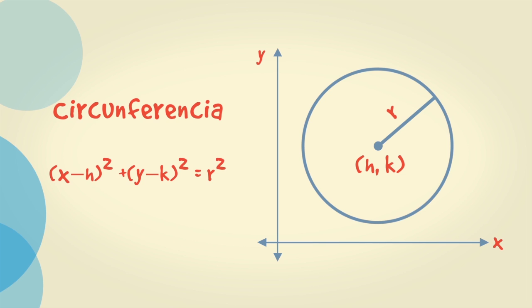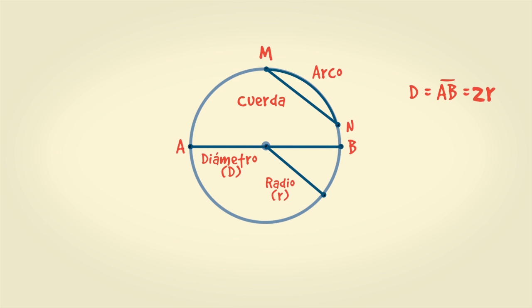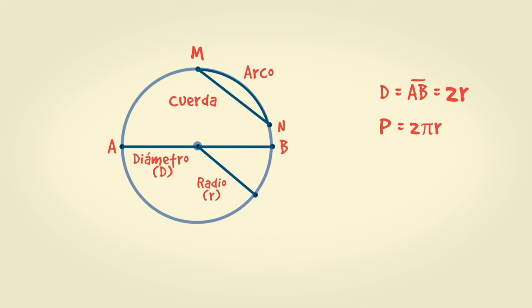En esta curva podemos trazar varias líneas como la cuerda MN, que es el segmento que une dos puntos de la circunferencia. El diámetro AB, que es toda cuerda que pasa por el centro de la misma, su medida equivale al doble del radio. El arco MN, que es la porción de la circunferencia limitada por dos puntos. El perímetro de esta curva es 2 pi por radio, y el área determinada por esta misma, pi por radio al cuadrado.